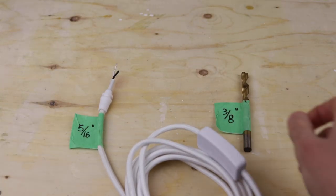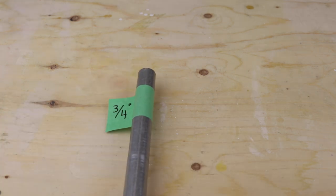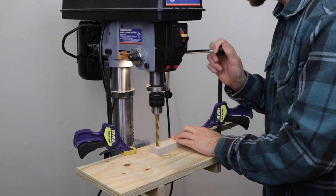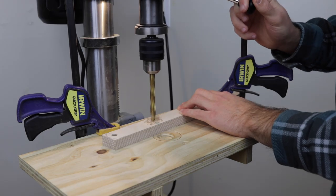To make holes for the lamp cord, I'd be using a 3/8 inch bit. And for the conduit, I used a 15/16 inch bit. I used my drill press to make all of the holes, but a hand drill would work fine as well.